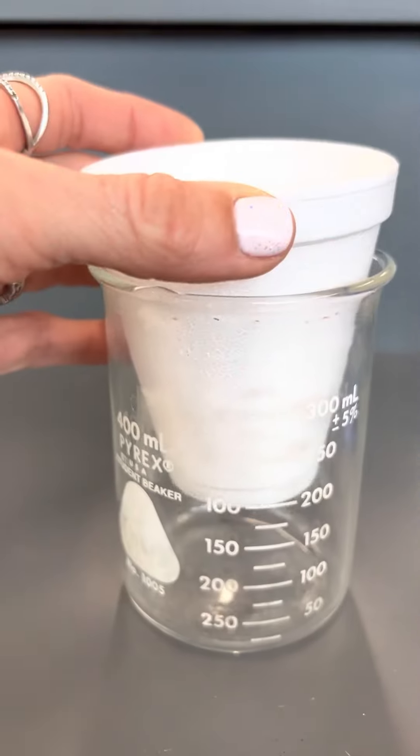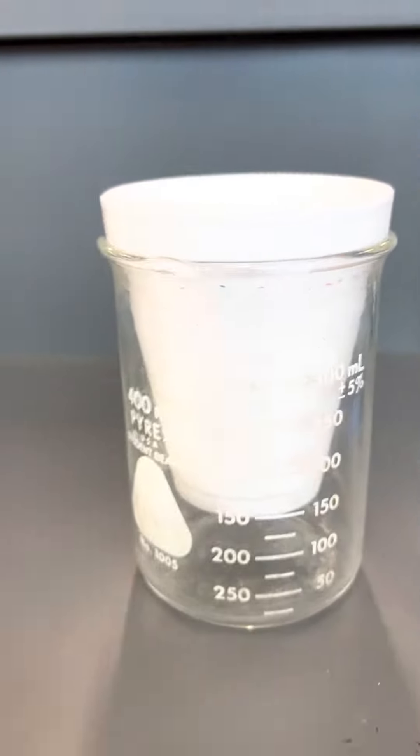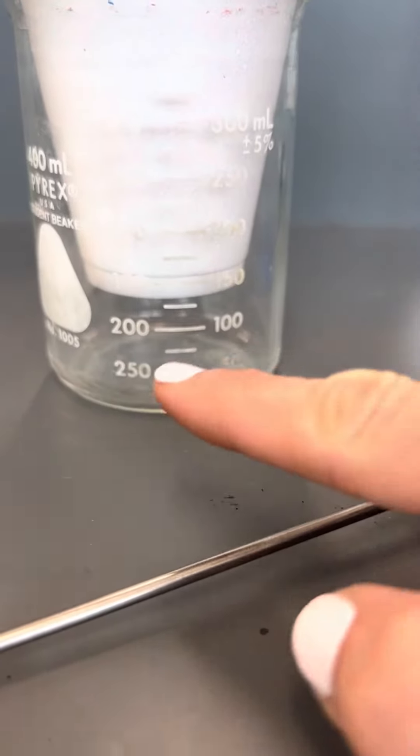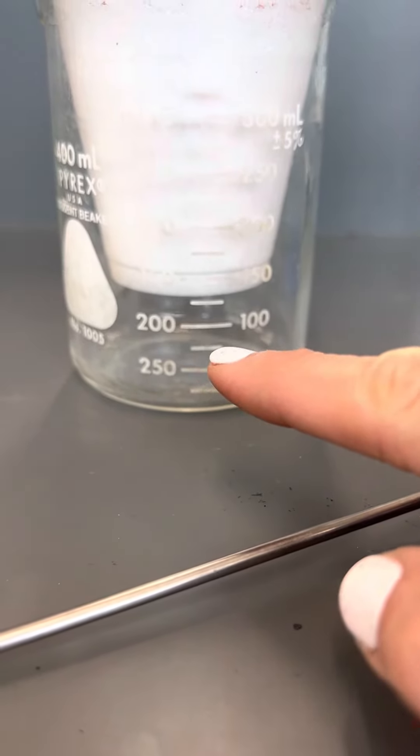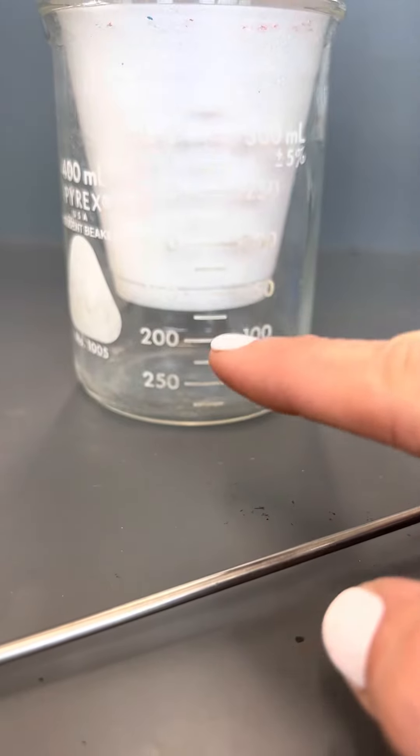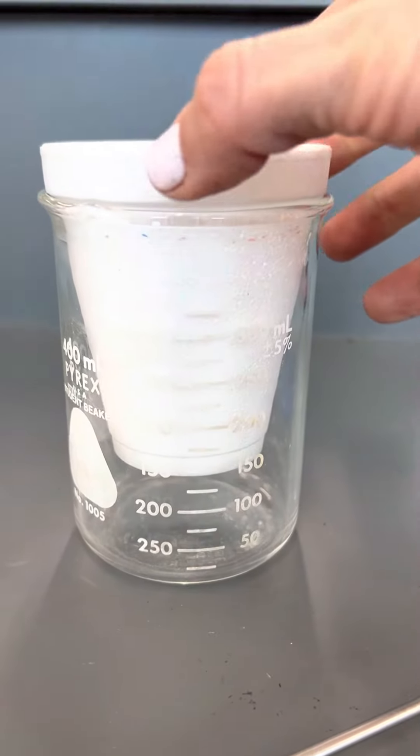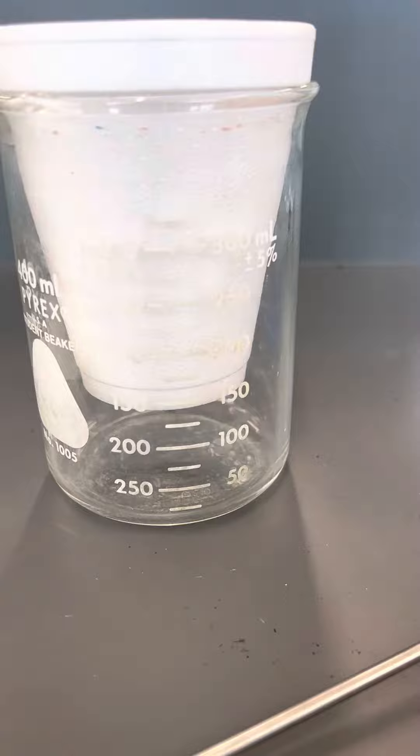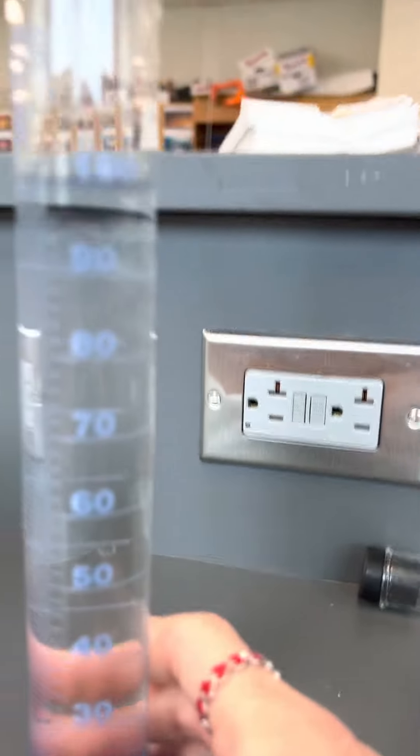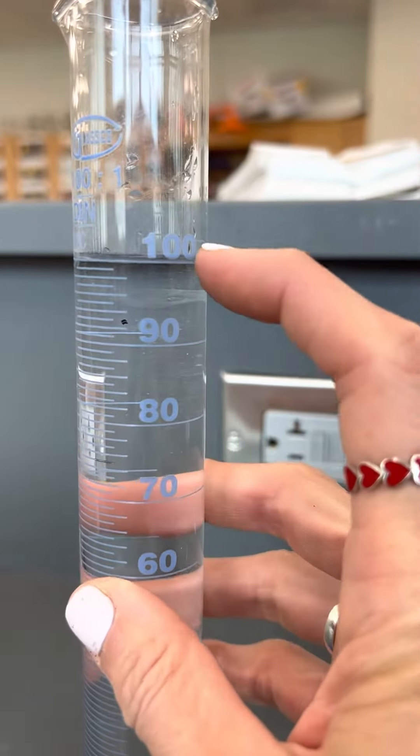We're going to nestle it in a 400 milliliter beaker so that there is no touching of that table to the cup, so all the heat stays in here. Air is a wonderful insulator. Then I'm going to take my 100 milliliters of water, right here, pour it in.